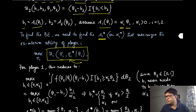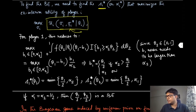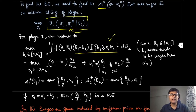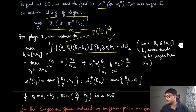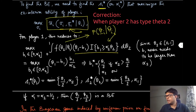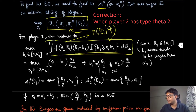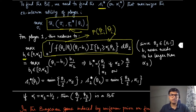We write this as an optimization problem from player one's point of view. The expected utility expands with the condition b1 ≥ b2, where we replace b2 with alpha2 * theta2. Since theta2 is a random variable, we take the expectation. The range for b1 is between 0 and alpha2, since theta2 always lies between 0 and 1 — b1 never needs to exceed alpha2.